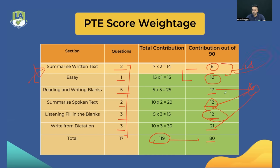The key takeaway for writing is: the most important tasks are Reading-Writing Blanks and Write From Dictation, then Summarize Spoken Text and Listening Fill in the Blanks. Whenever students are missing out in writing, I always say don't focus too heavily on Summarize Written Text and Essay — those two tasks only give you about 18 points. The remaining points come from the other four question types.